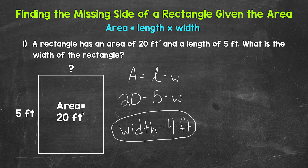We can double-check that by plugging four in for the width: five times four equals 20. So we're good to go, and that's it — we're done.